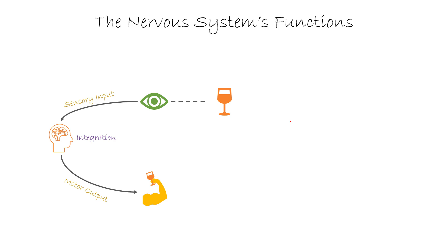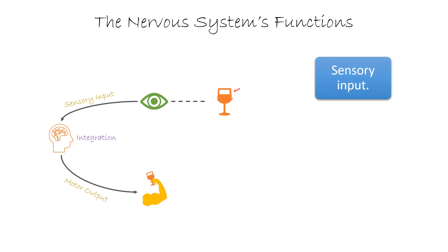To start with, let us understand the basic functions of the neural system or the nervous system. Imagine there is a glass of water and you want to drink it. At a physiological level there are certain events going on at a very rapid pace through the nervous system. The first is sensory input — when you see that glass of water, the eye, which is the sensory organ, gives information to the brain as a sensory input.